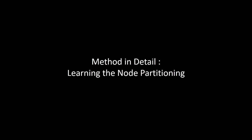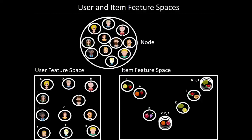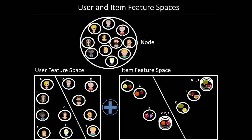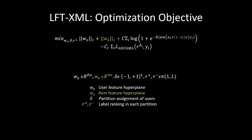Let me explain in detail how we are actually partitioning at each node. The partitioning boils down to learning two hyperplanes — one in the user space and one in the label feature space. There are many possible variations: we can jointly learn these hyperplanes at each node, or we can learn them independently. In our approach, we are learning both hyperplanes jointly. This is our optimization function, and I have highlighted the difference from FastXML in green — this part incorporates label features.